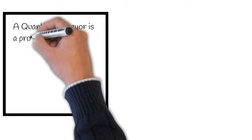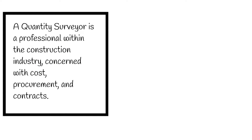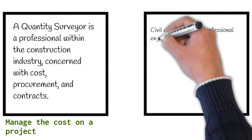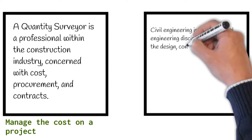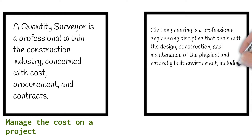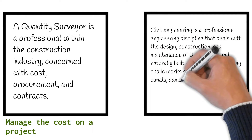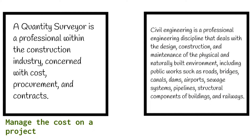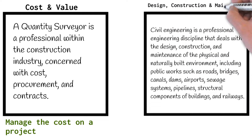A quantity surveyor is a professional within the construction industry concerned with cost, procurement, and contracts. To make it even more simple, the main reason a company would hire a quantity surveyor is to accurately manage the cost on a project. Civil engineering is a professional engineering discipline that deals with the design, construction, and maintenance of the physical and naturally built environment, including public works such as roads, bridges, canals, dams, airports, sewage systems, pipelines, structural components of buildings, and railways. So here's the first difference: a QS is focused on the cost and value of a project, and a civil engineer is focused on the design, construction, and maintenance.